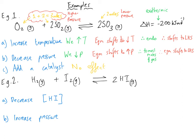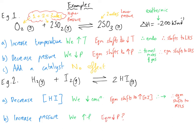In the second example, if we decrease the concentration of hydrogen iodide gas, the equilibrium shifts to replace it — to make more hydrogen iodide — so it shifts to the right-hand side. For the final example, increasing the pressure: there are two molecules of gas on the left and two on the right, so both sides are at equal pressure. Increasing or decreasing pressure therefore has no effect on the position of equilibrium, although it would affect the rate of reaction.